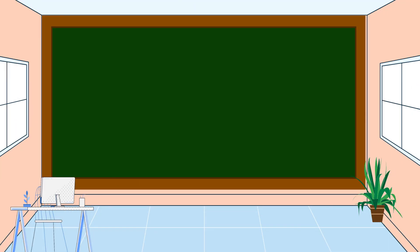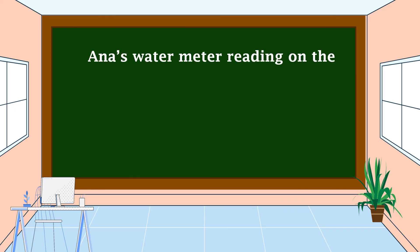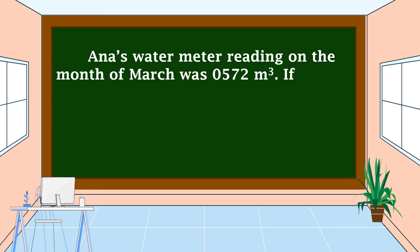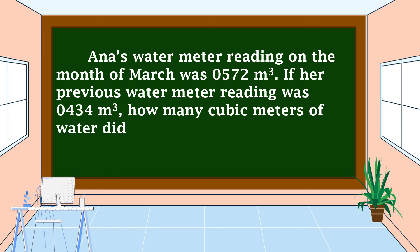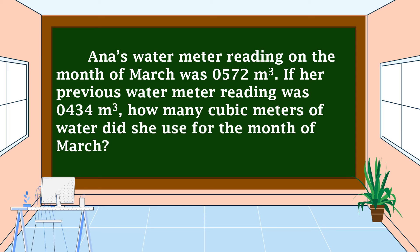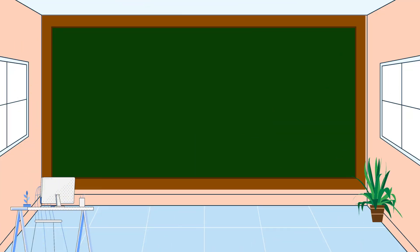This is our second problem. Anna's water meter reading for the month of March was 572 cubic meters. If her previous water meter reading was 434 cubic meters, how many cubic meters of water did she use for the month of March?